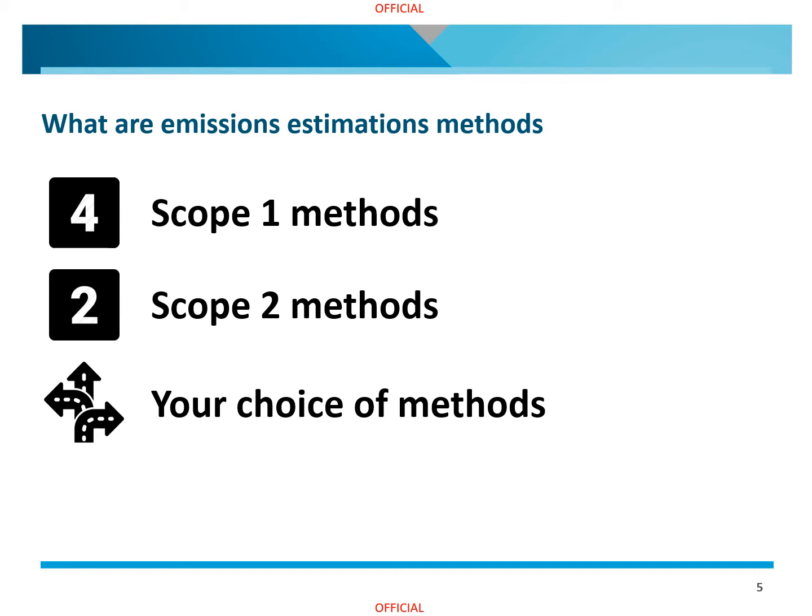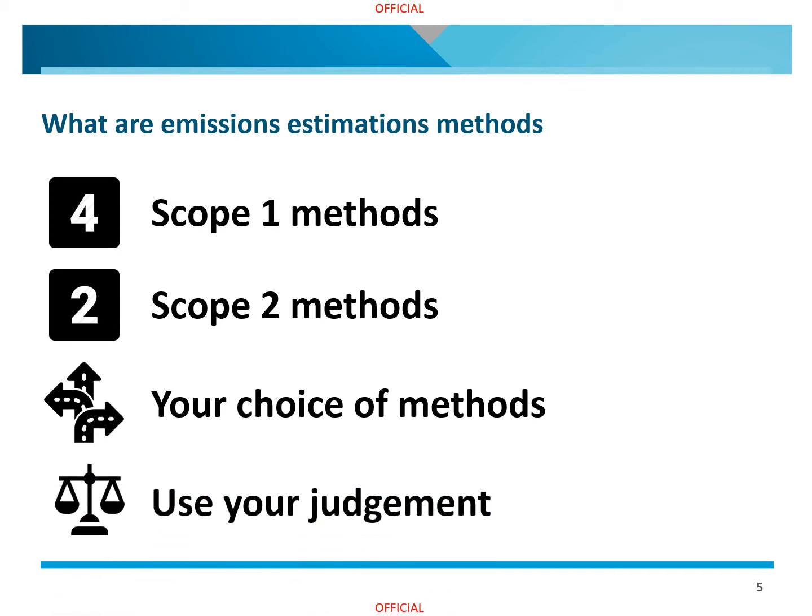Where available as an option, reporters may select different methods for each source. Generally speaking, the higher the method, the more accurate the estimates are. Reporters can use their own judgement to balance the costs of using the higher methods with the benefits of potentially improved emissions estimates.